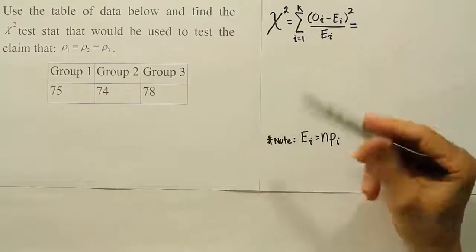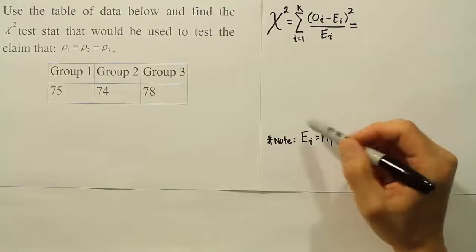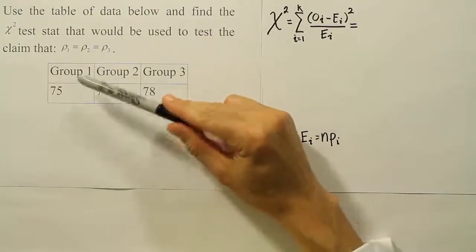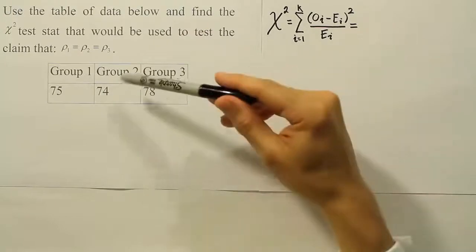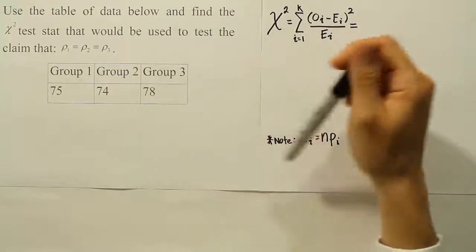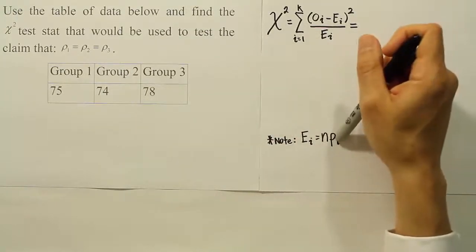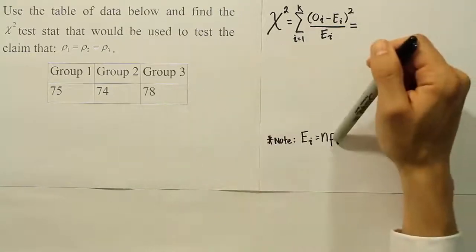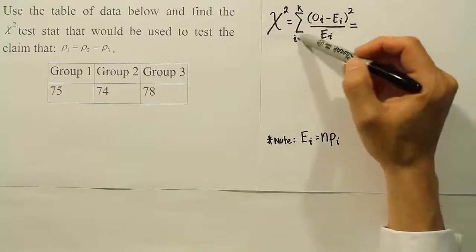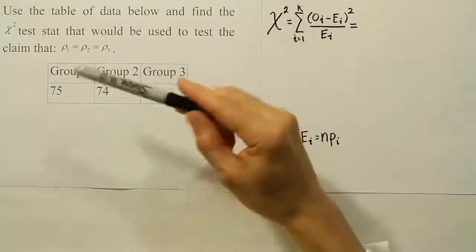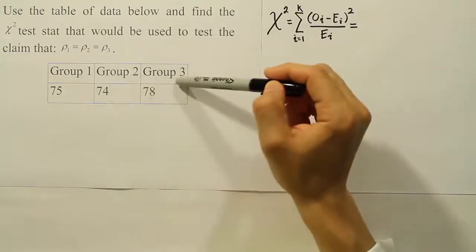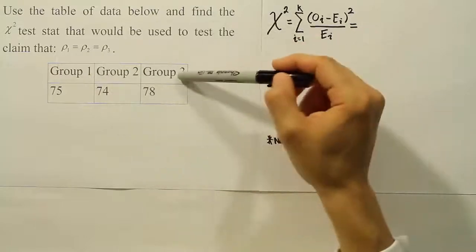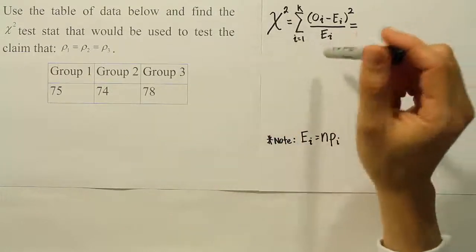So we have these E_i, p_i, and the i is just referring to either group 1, so that would be E_1, group 2, E_2, group 3, E_3, and so on and so forth. And this would be p_1, p_2, p_3, depending on what group we're working in. Same with these i's here. And there's K of them. K just represents the total number of categories you have. Here we have 3 categories, so K would be 3.